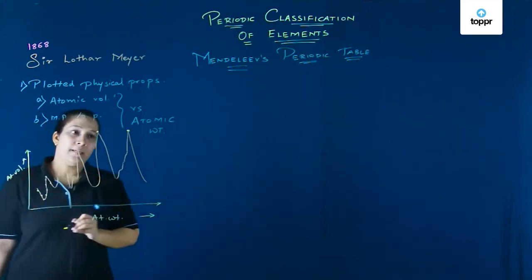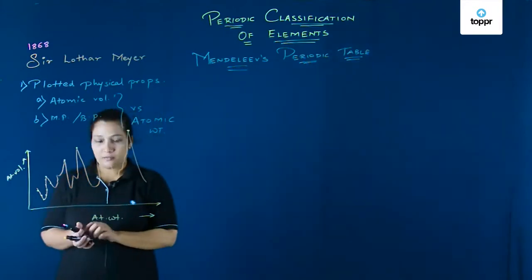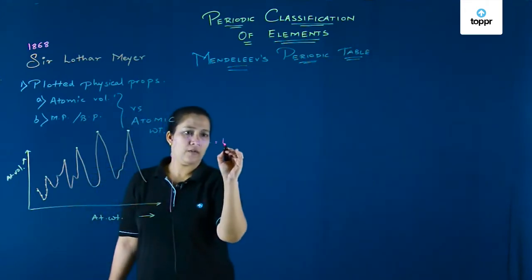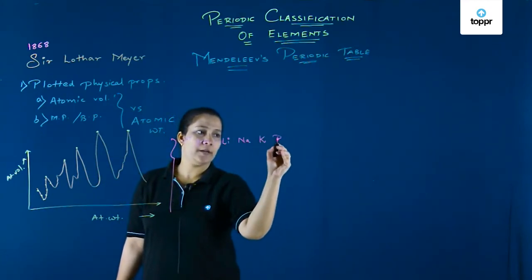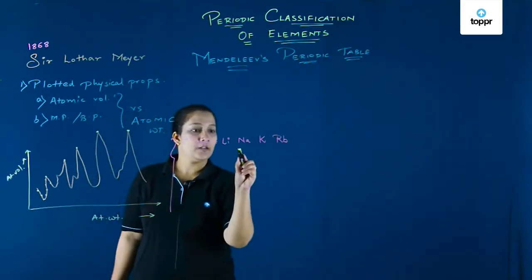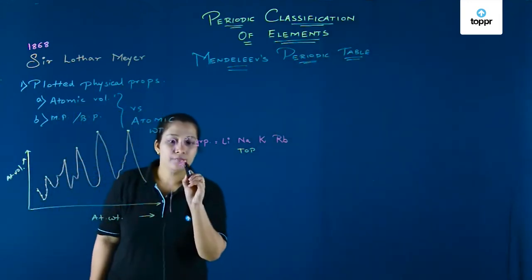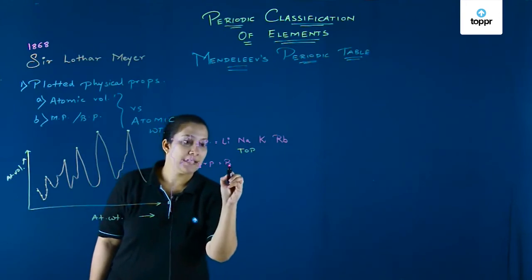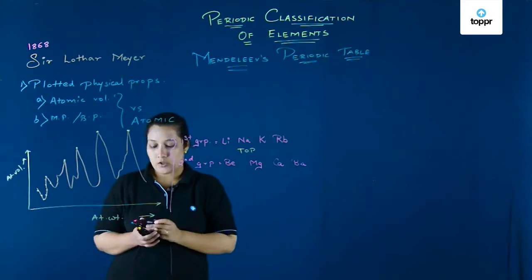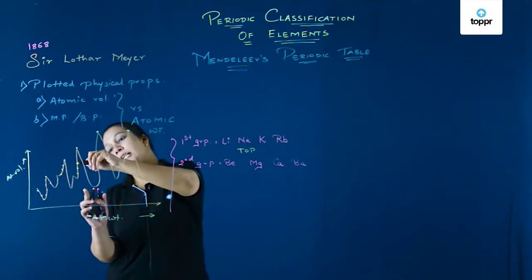The ones you see as peaks on the graph — these were the elements of the so-called first group which we see today in our periodic table. From this graph it was seen that the first group elements — lithium, sodium, potassium, rubidium — were occupying the top positions, the peaks, on the plots.